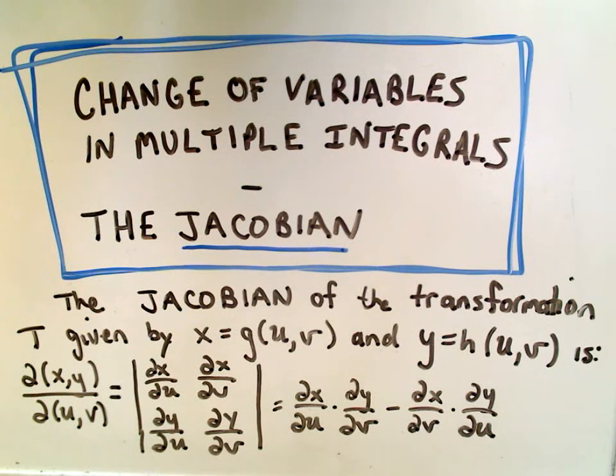So without going into too much of the theoretical side of it, the Jacobian is basically just a determinant. Maybe you remember these from linear algebra. And it says to compute the Jacobian, basically we just find the determinant of this part. So we take the partial of x with respect to u, the partial of x with respect to v, the partial of y with respect to u, and the partial of y with respect to v.